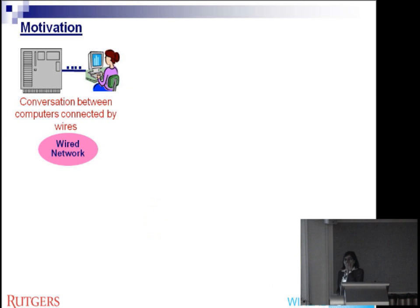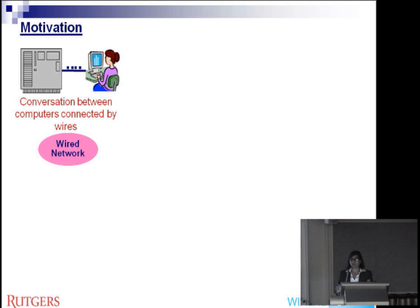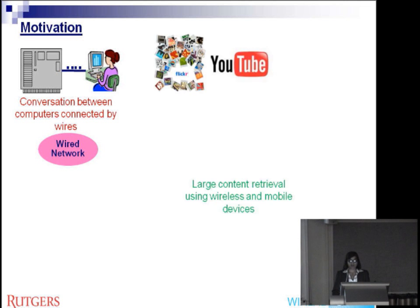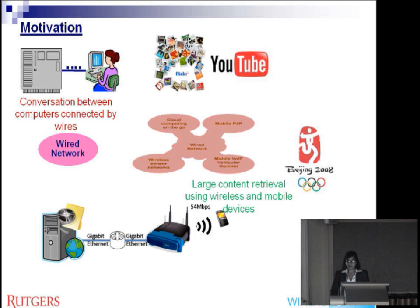Let me give the background motivation of why we are doing this work. The internet, which was designed several decades ago, was designed for conversation between computers which were wired and connected over this backbone network, strictly over wired interfaces. However, now the main application of the internet is content retrieval, and that too using mobile and wireless devices.